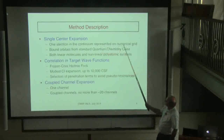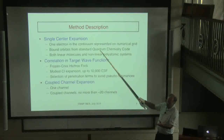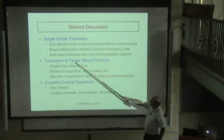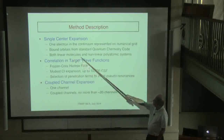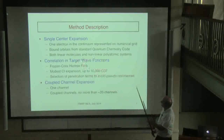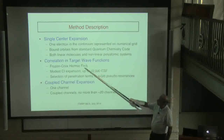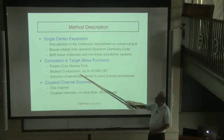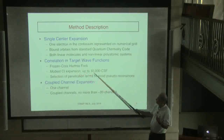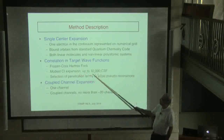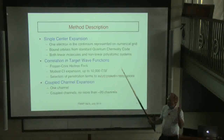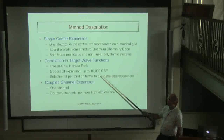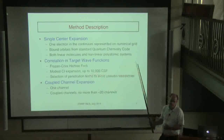The continuum part is on a numerical grid, but I take the bound orbitals describing the target from a quantum chemistry code, typically MOLPRO. We've done some linear molecules at a fairly high level, and then some non-linear polyatomics. How much correlation you put in the target wave function — you could do a simple Hartree-Fock (static exchange), but going beyond that we use modest CI expansions representing the target, something up to 10,000 CSFs. This limit comes from the fact that the code has to do a LAPACK diagonalization — I don't use an iterative diagonalizer, so you run out of steam around 10,000 CSFs.